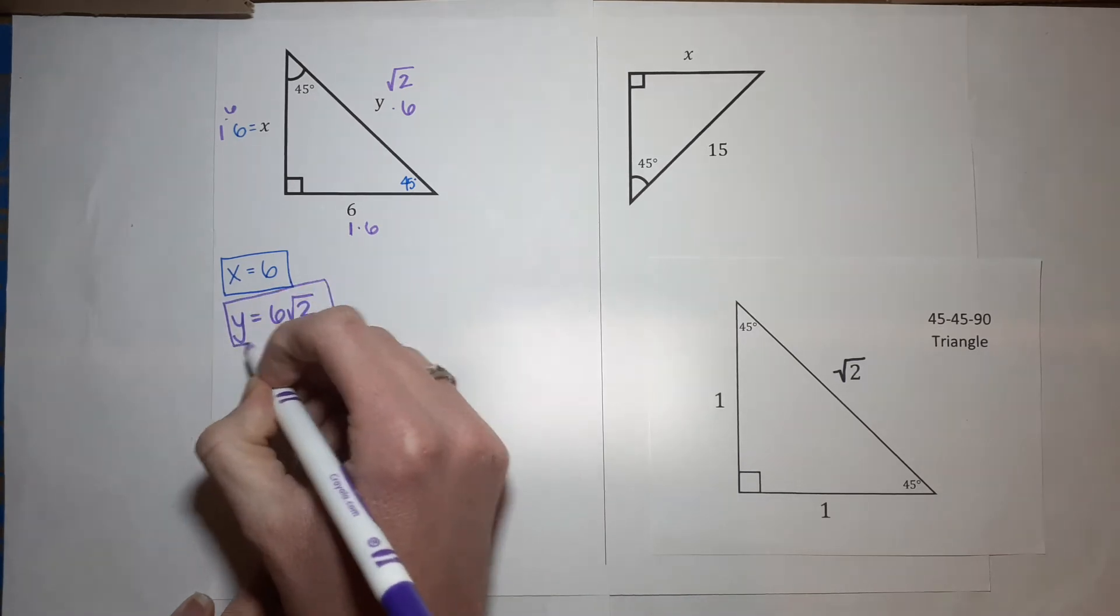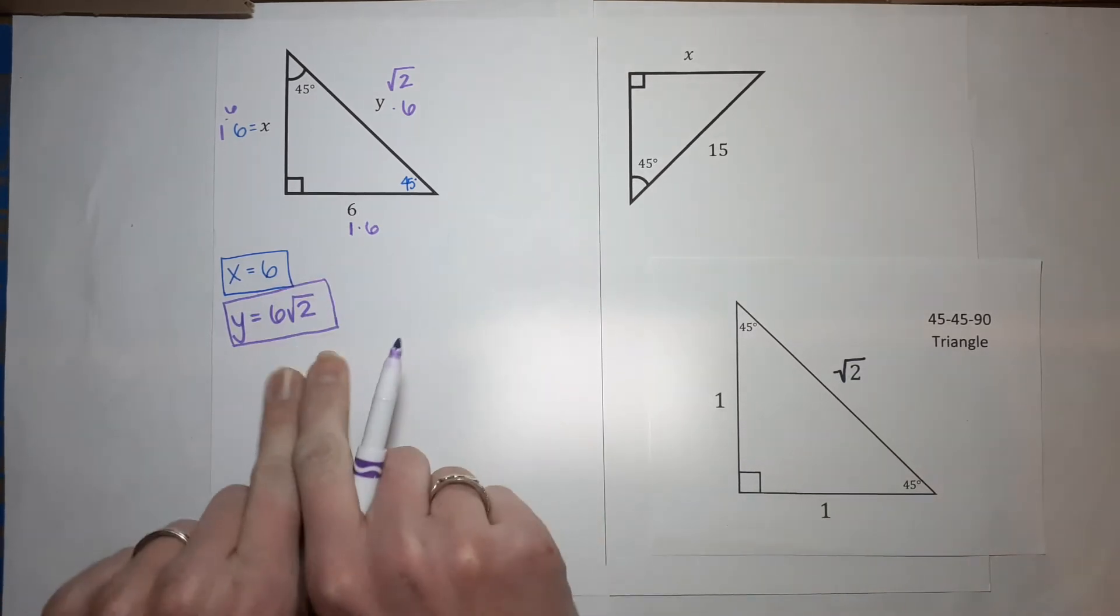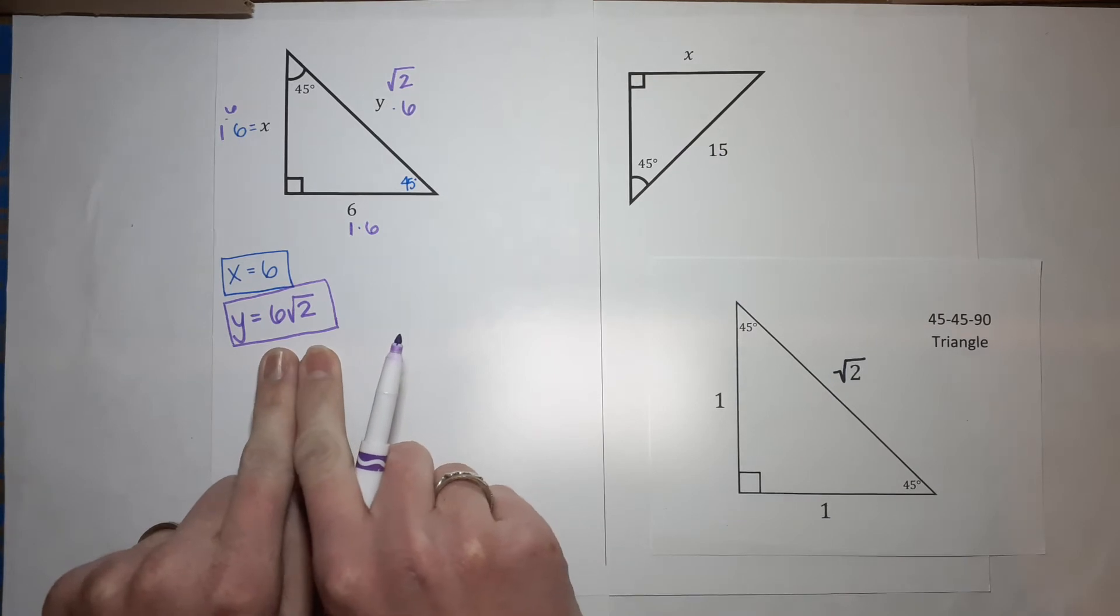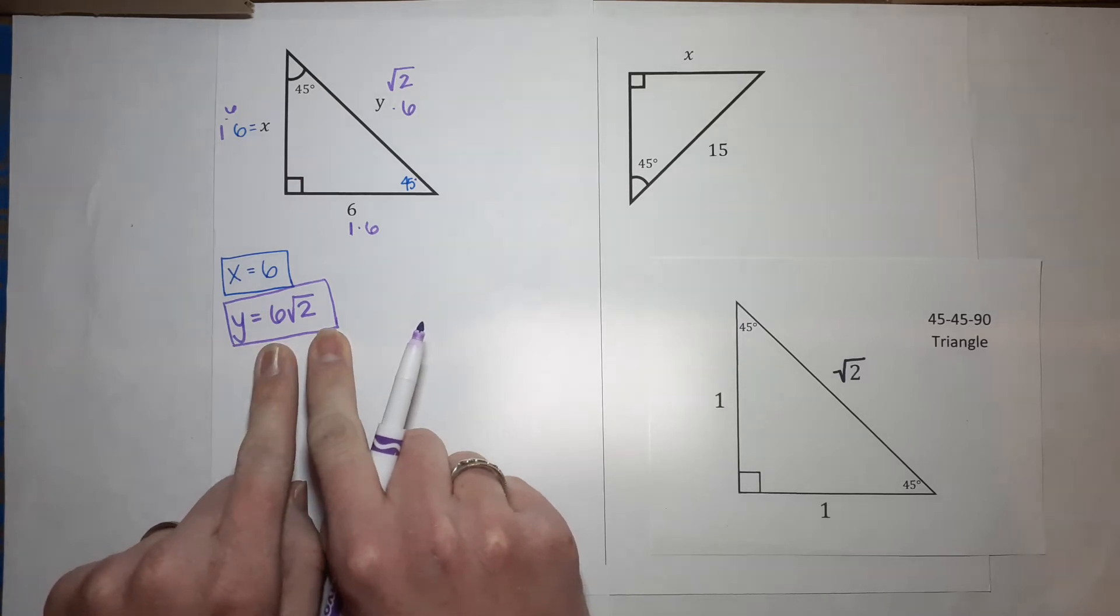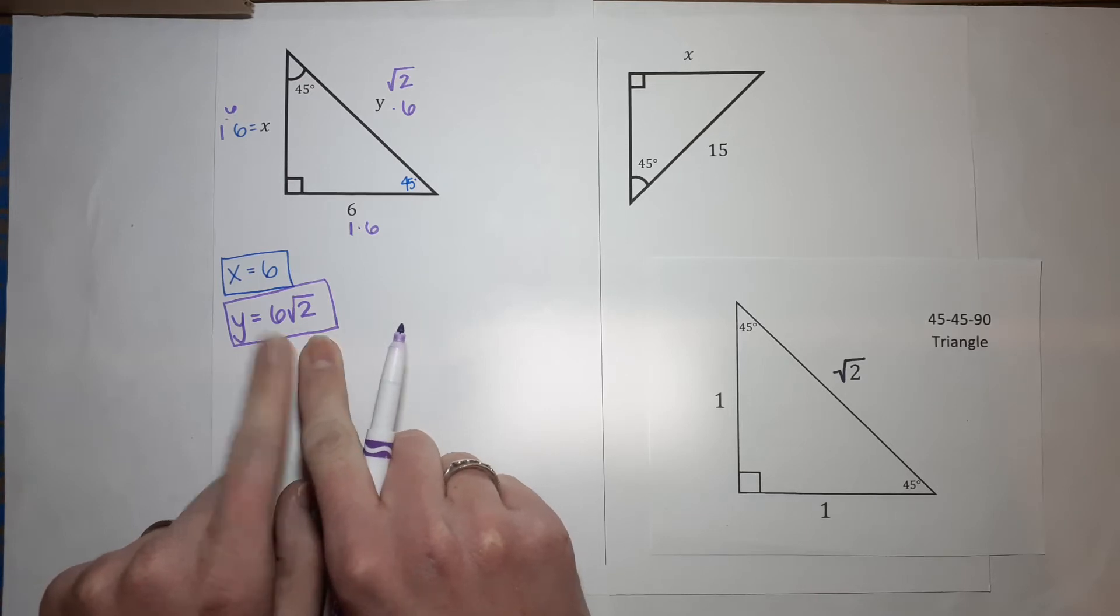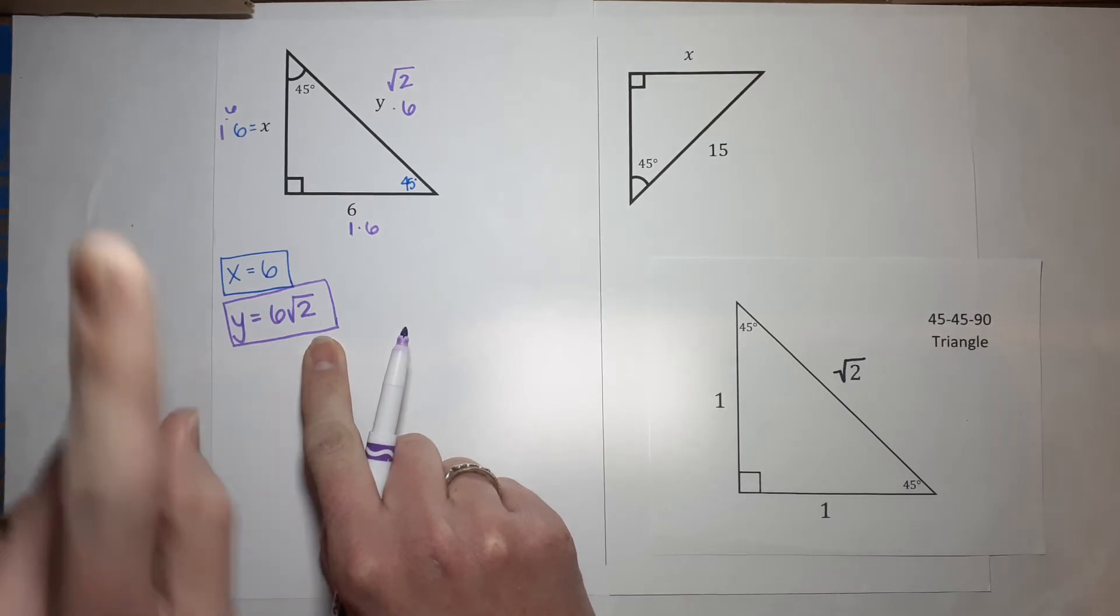Now, I would say probably 99% of the time, your teacher will probably want the answer like that, just six square roots of two. If for some reason they want it as a decimal, just plug that in to your calculator. If you need radical review, a review on radicals, I will link a video over there.